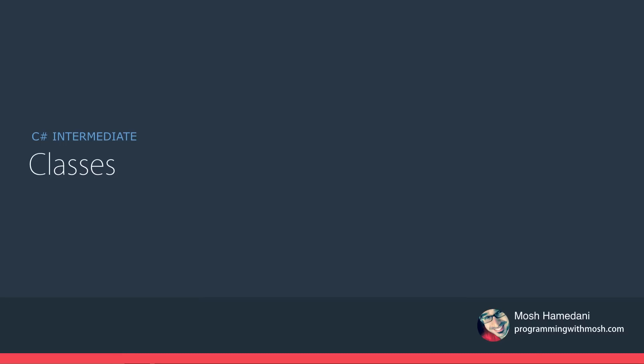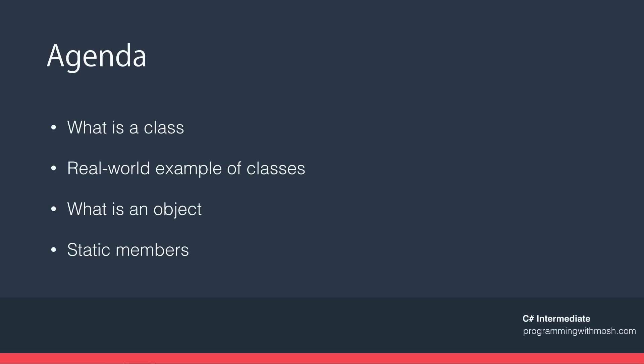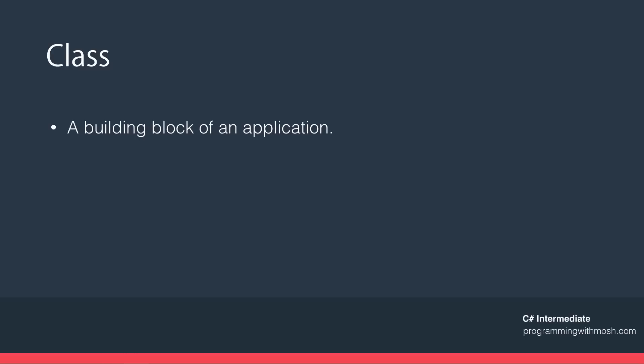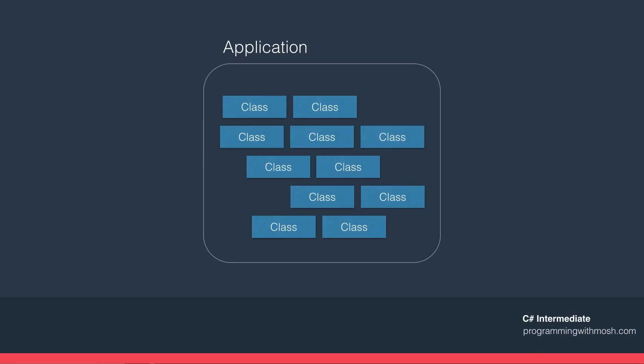We're going to start our journey by learning about classes. In this lecture I'm going to introduce you to the basics of classes, show you a real-world example of why we need them, talk about what an object is and how it's different from a class, and finally we'll talk about static members. A class is simply a building block of a software application. In the real world, an application consists of multiple classes each responsible for a particular behavior, and together they provide the expected behavior.